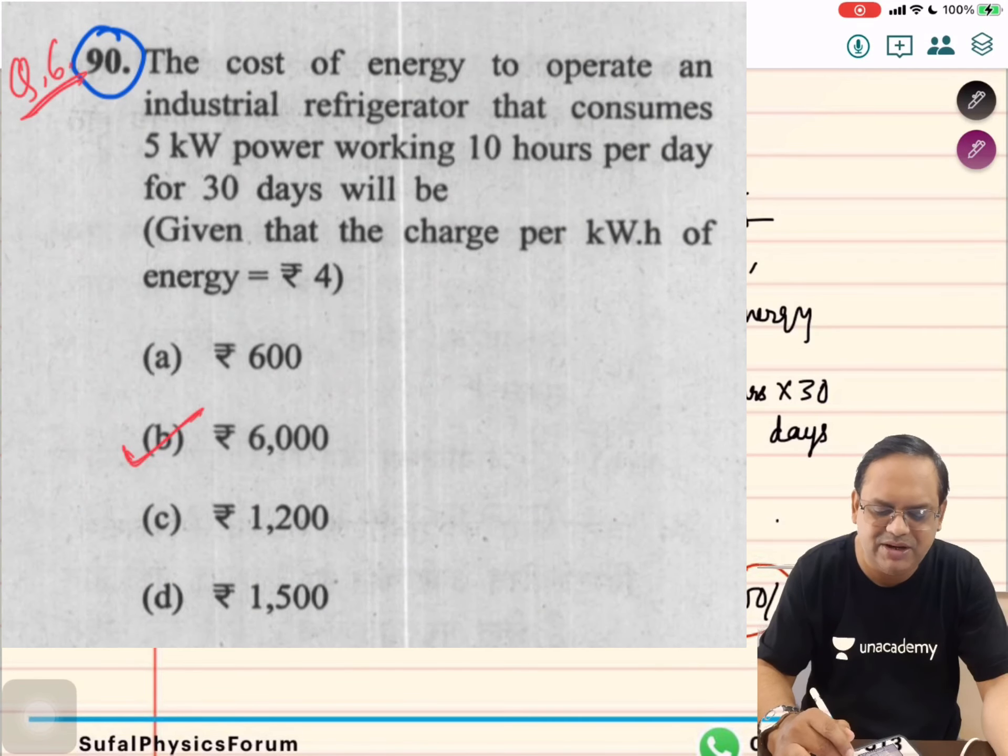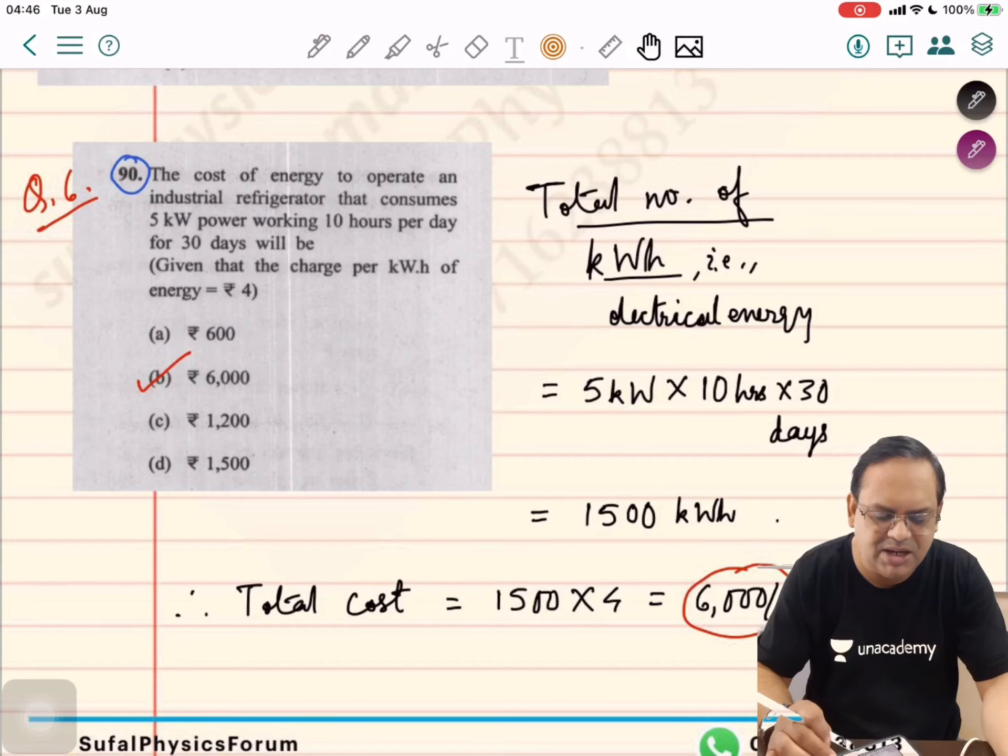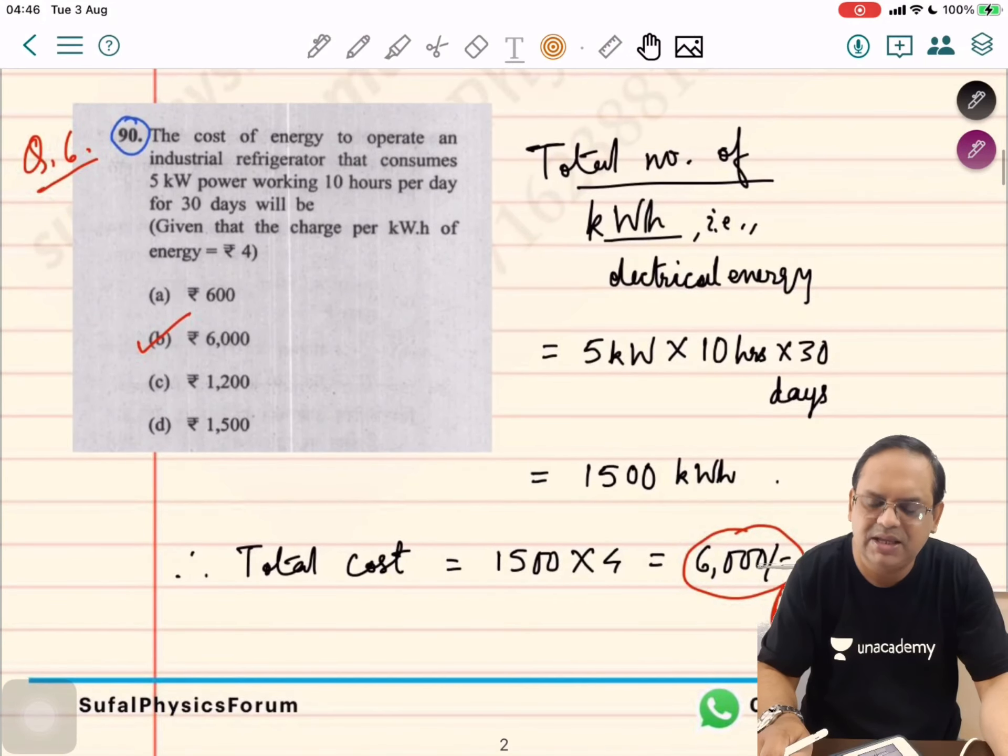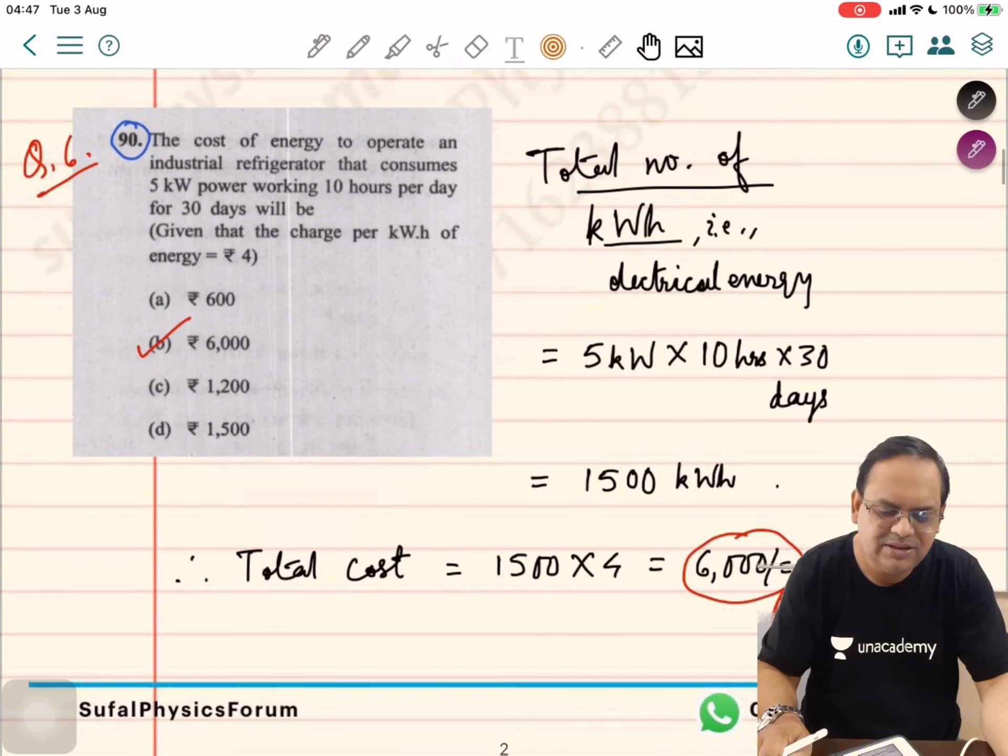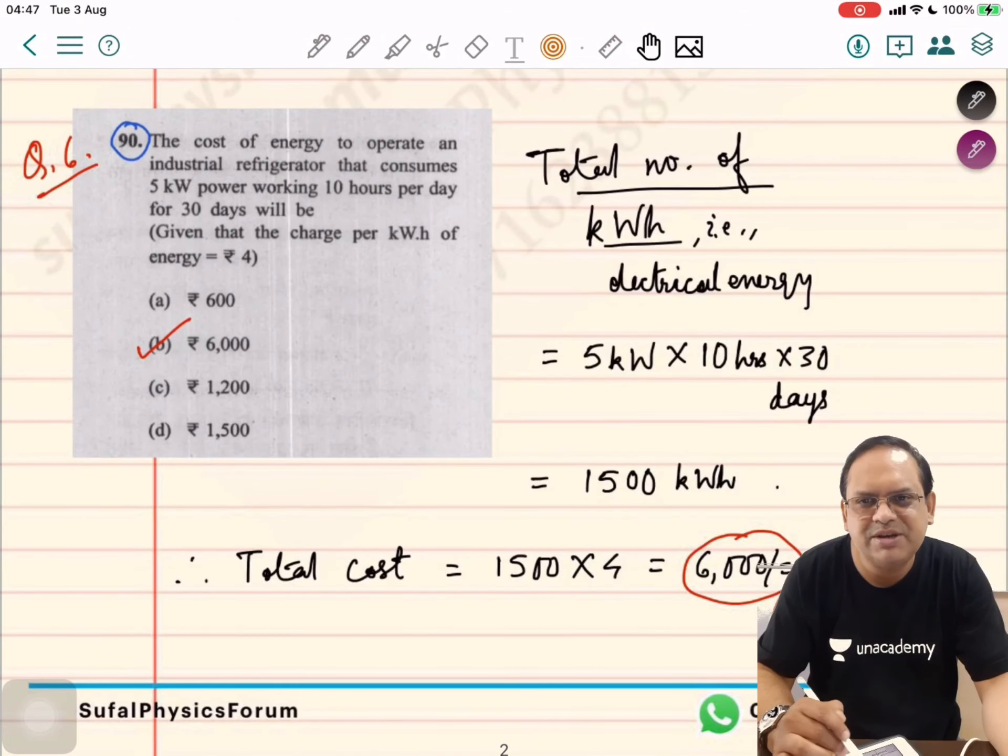Question number 90. The cost of energy to operate an industrial refrigerator that consumes 5 kilowatt power working 10 hours per day for 30 days will be. Basically, this question is: what is the total number of kilowatt hours? We need to calculate the total number of kilowatt hours.